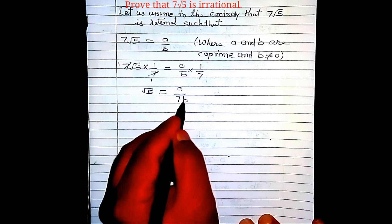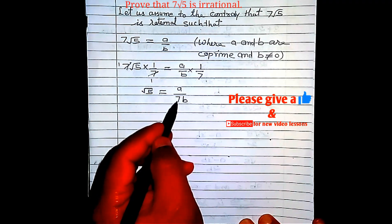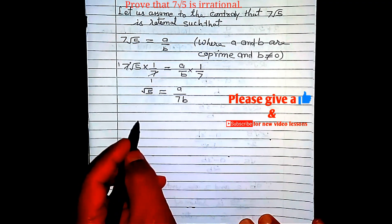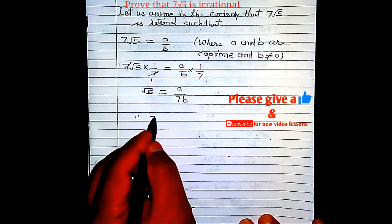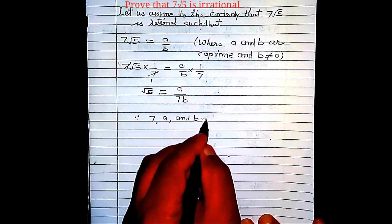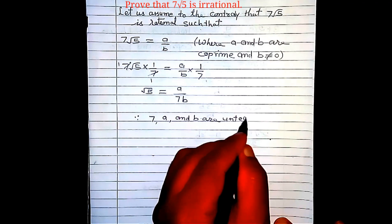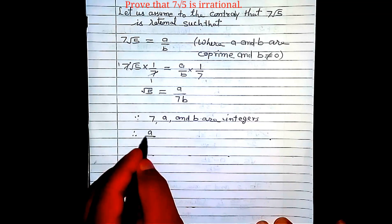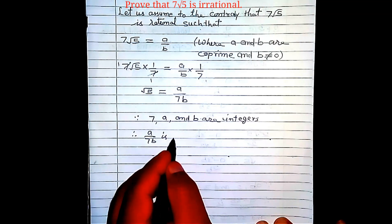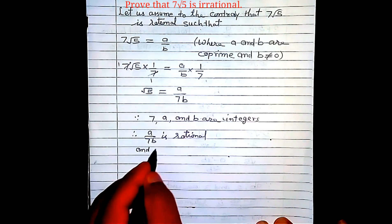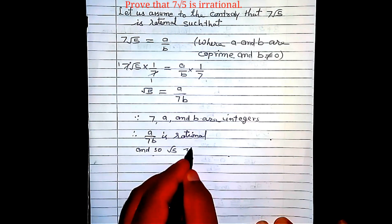Now you can see that a, b, and 7 are integers. Therefore, a and 7b are also integers. So we can say that since 7, a, and b are integers, therefore a/7b is rational.